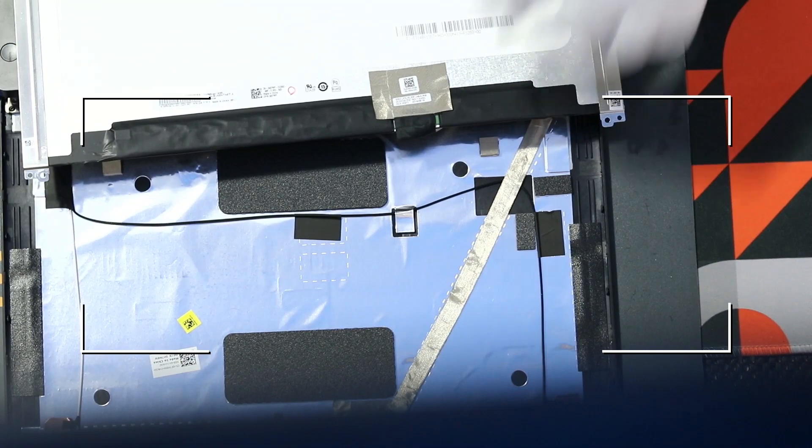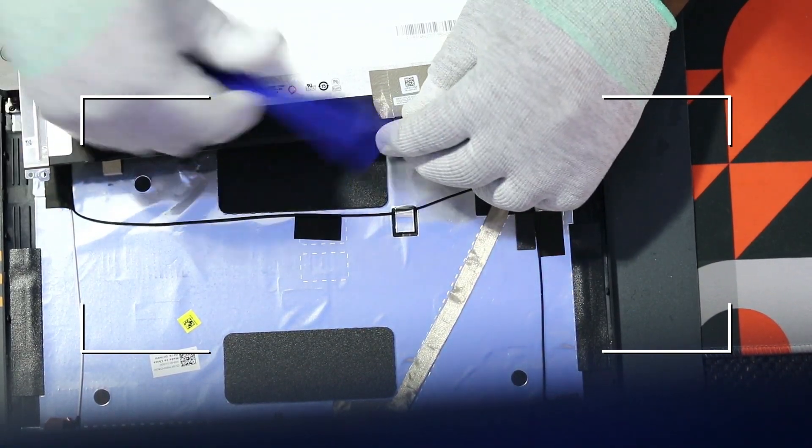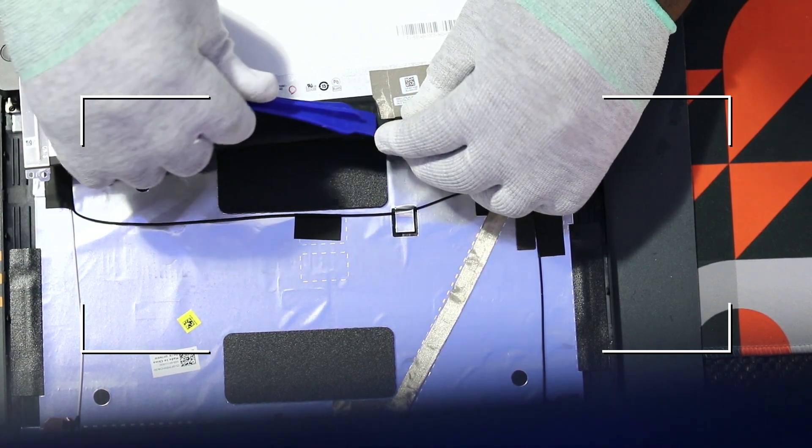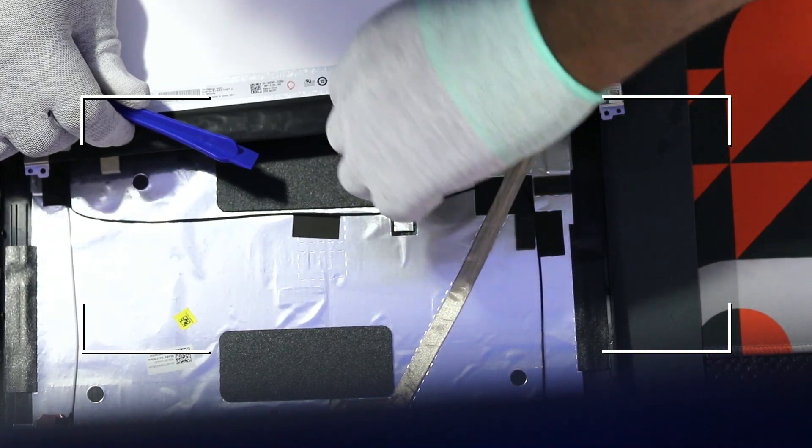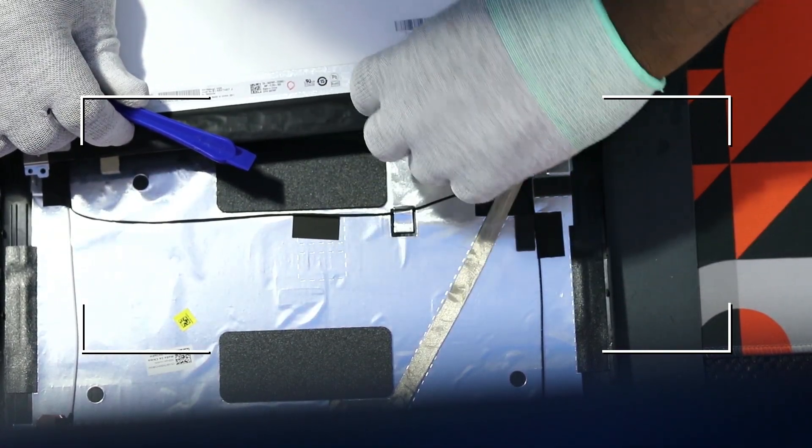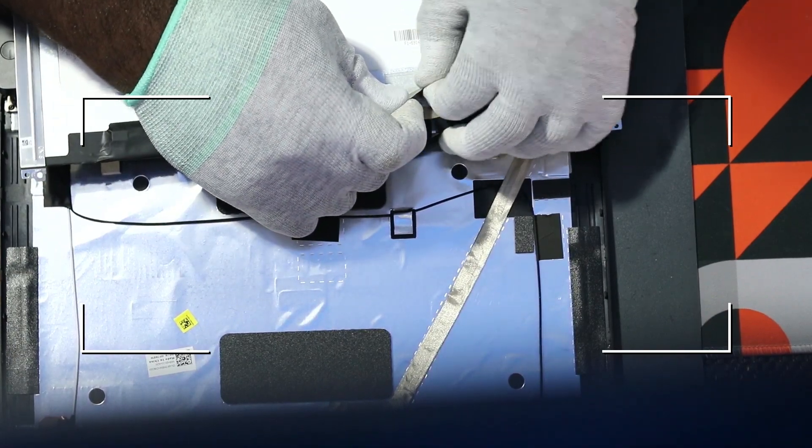You should see right there that you should be able to peel this. A little glue tape. Careful when you pull on this because this is a connector that you'll need to reuse.